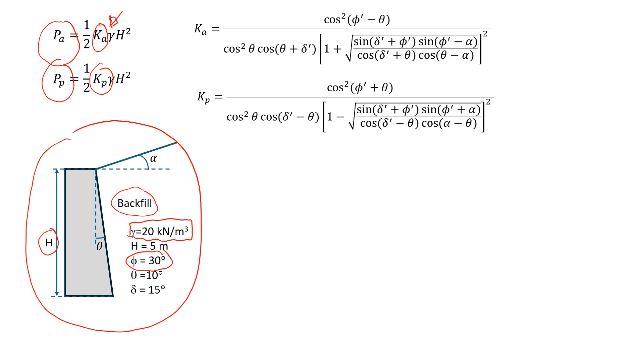So this will be the unit weight of soil, and that will be the height of the retaining wall in the power of 2. So these are the coefficients, how we can estimate them. This is for active pressure. This will be for passive pressure.